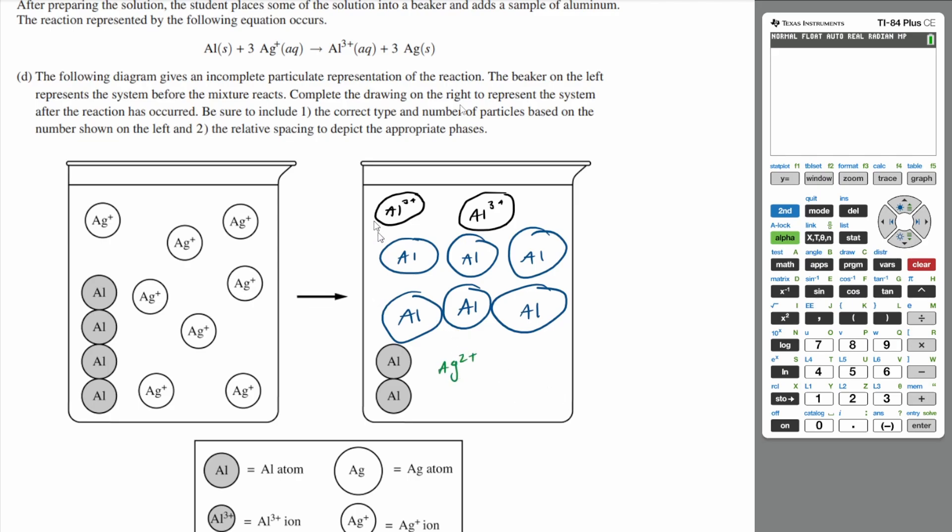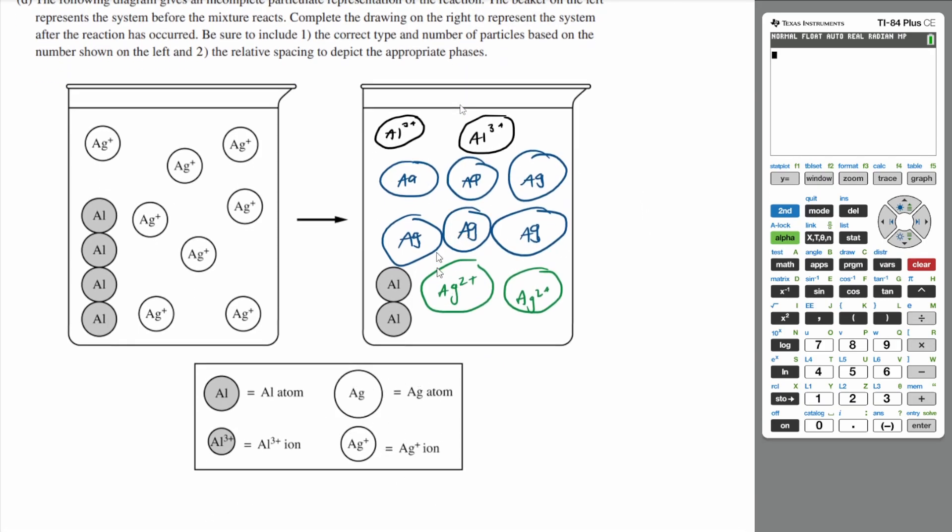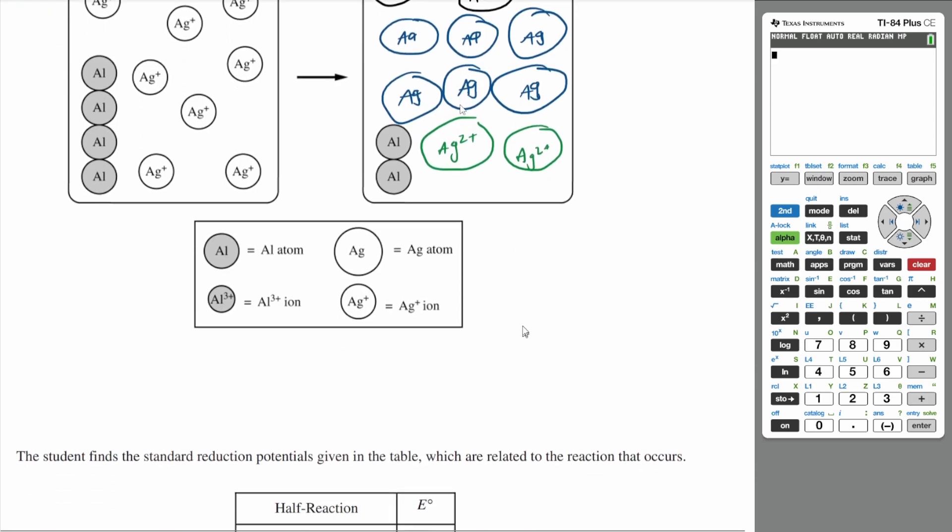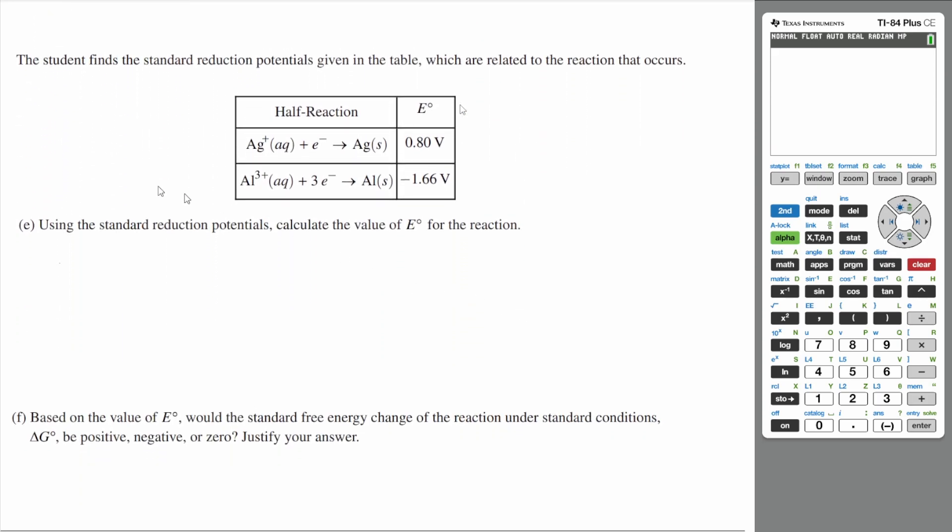So you're going to have two more of the silver ions left. So Ag+, and then, oh, whoops. These should be silver Ag. Sorry about that. So you have six of these silver atoms, the solid atoms forming, and then you have two of these silver ions left over. It's hard to get the relative spacing right, but you can use the key here to make sure that you have the right spacing. All right. Let's go to the next one, the next part.